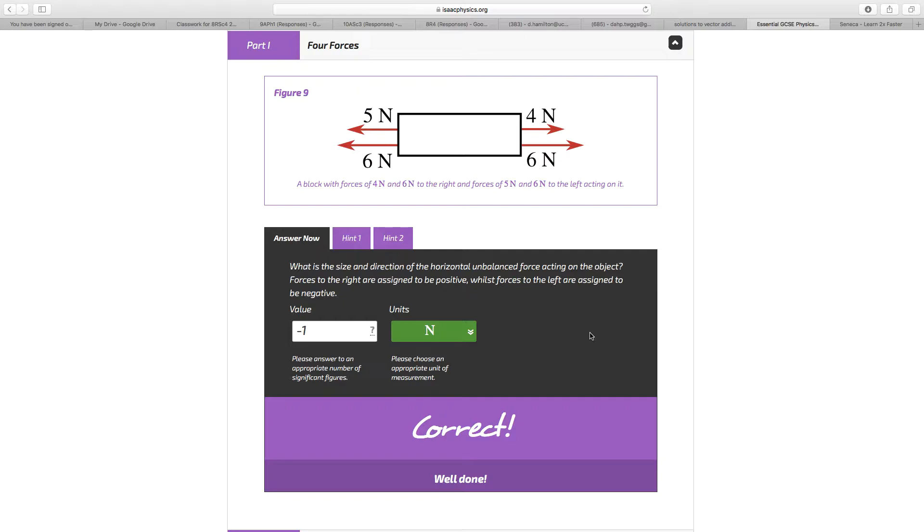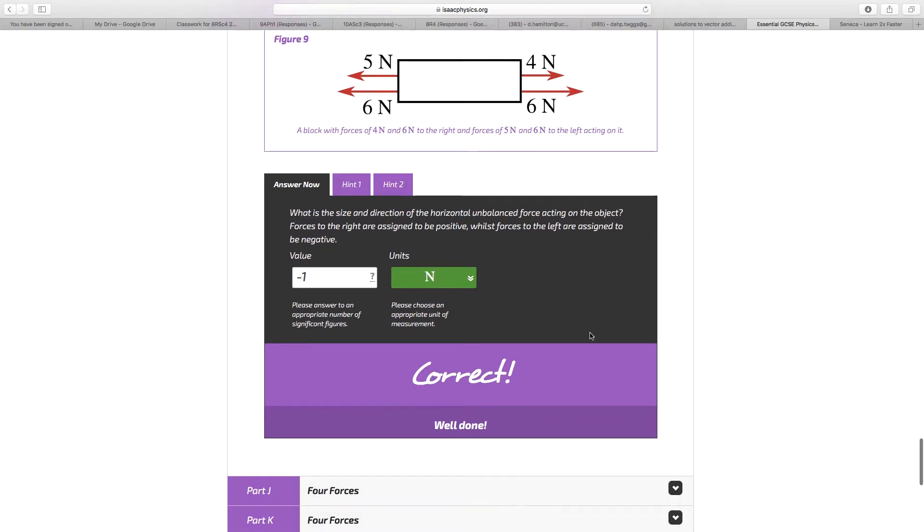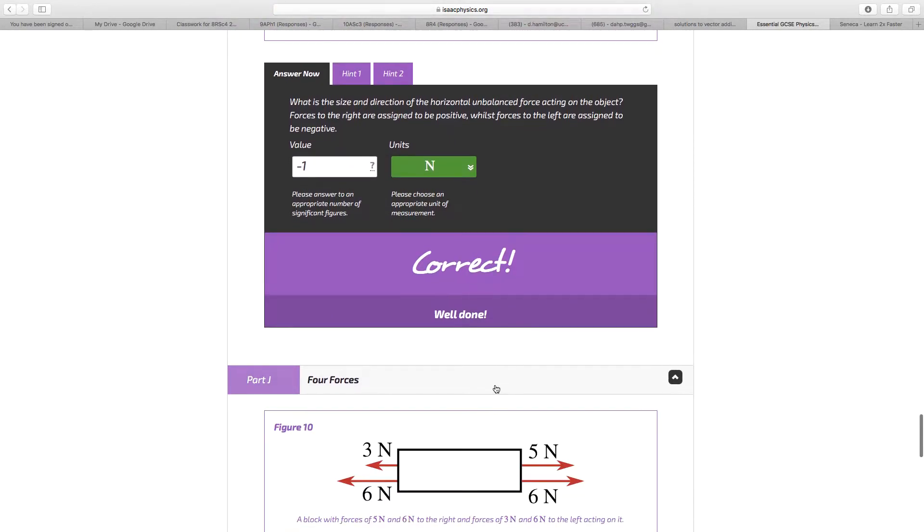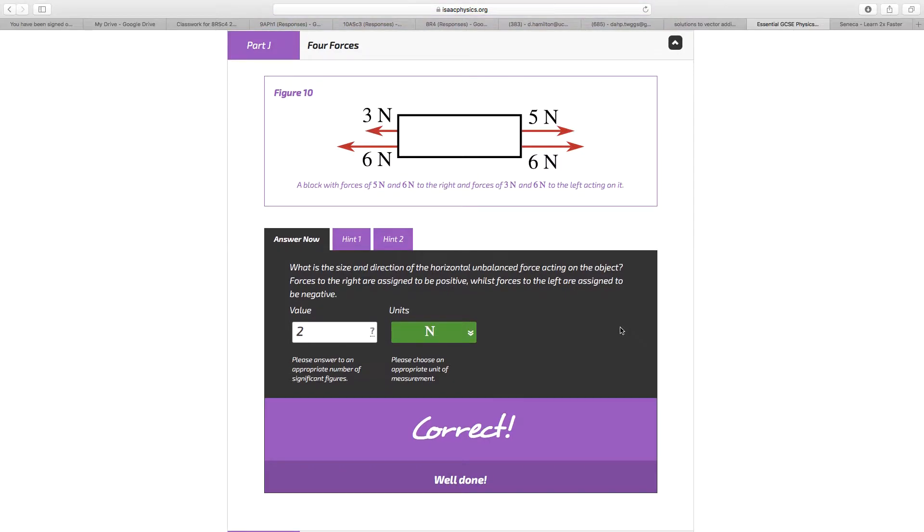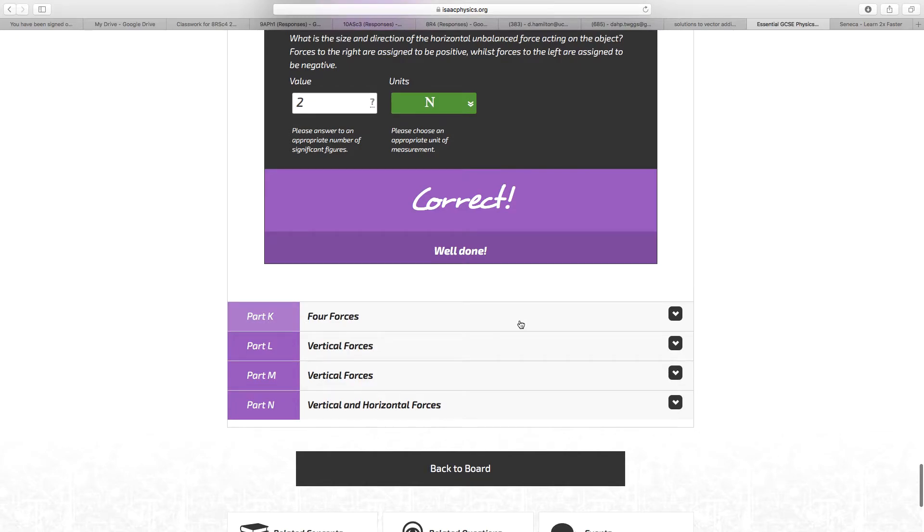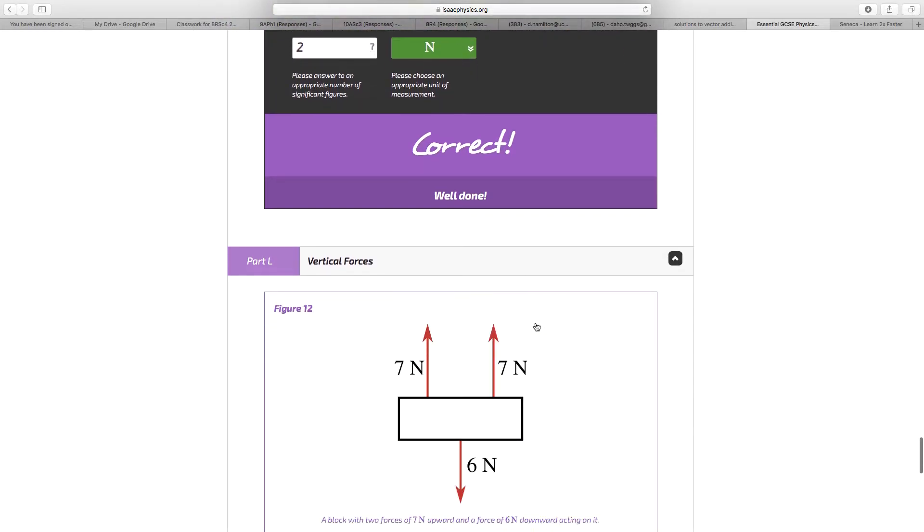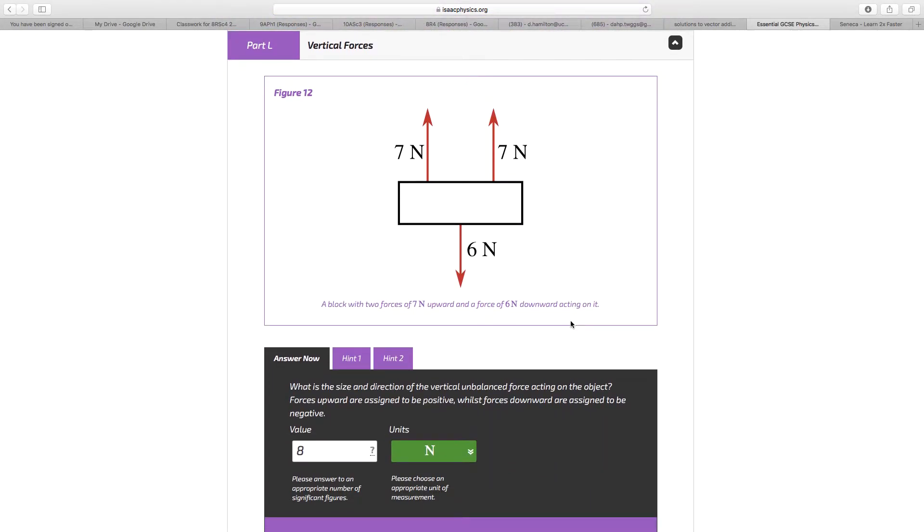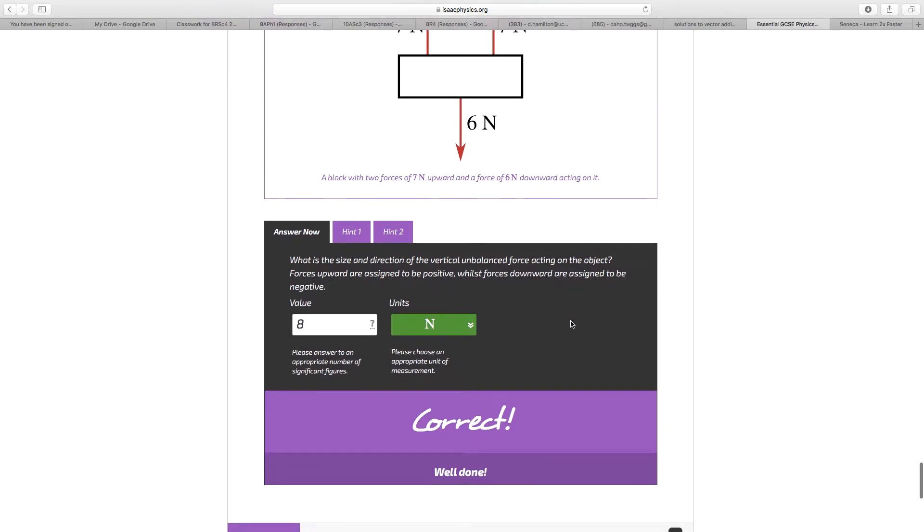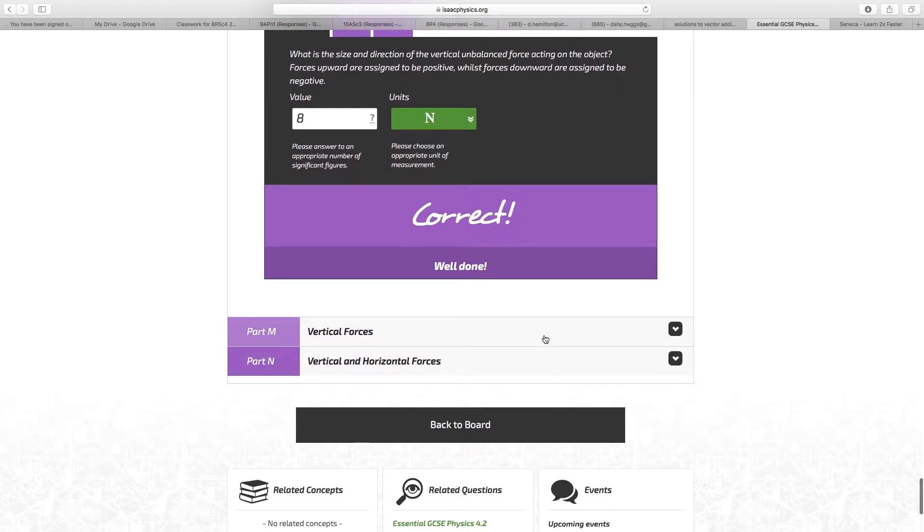11 and 10, so we have 1 Newton to the left, minus 1 Newton. We have 9 to the left and 11 to the right, so that's 2 to the right, plus 2. 10 and 12. 12 to the right then, 2 Newtons positive. Vertically we've got 14 up and 6 down, giving you 8 up, 8 Newtons positive.